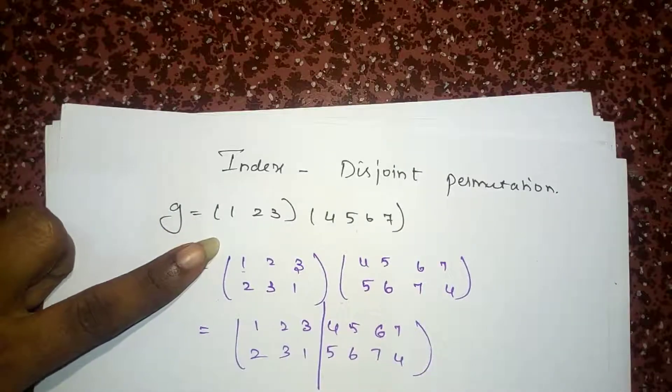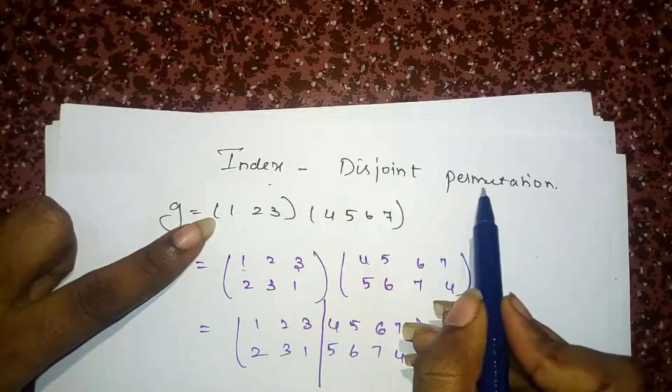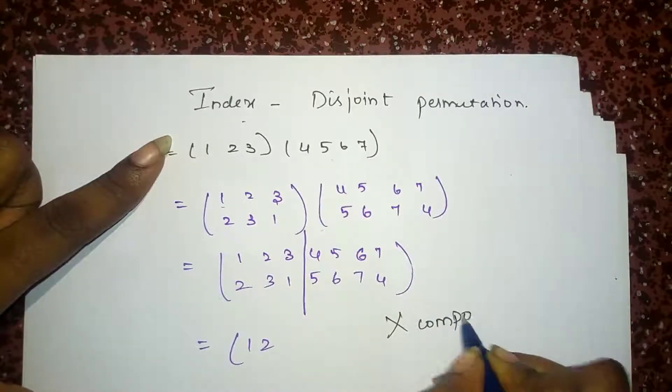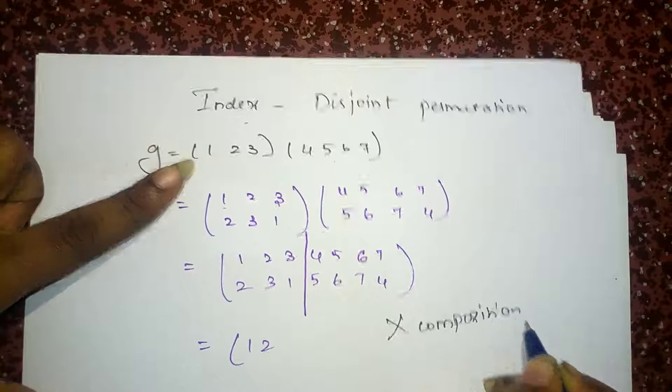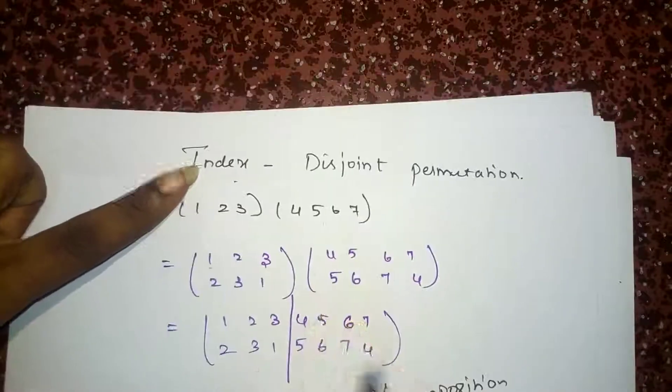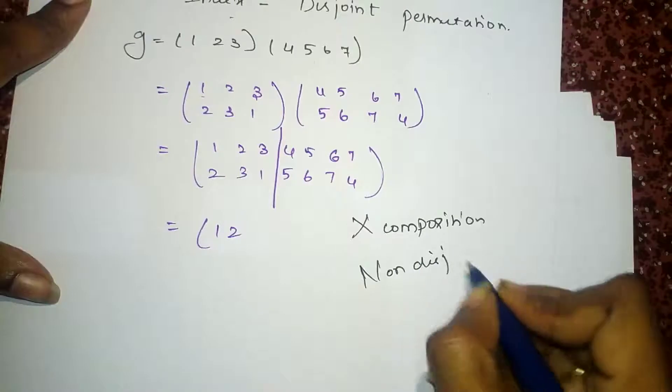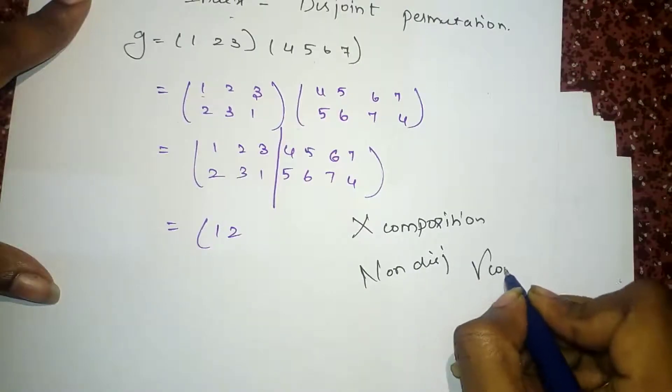Note it, for index of disjoint permutation, you don't have to do composition operation. You don't have to perform this one.